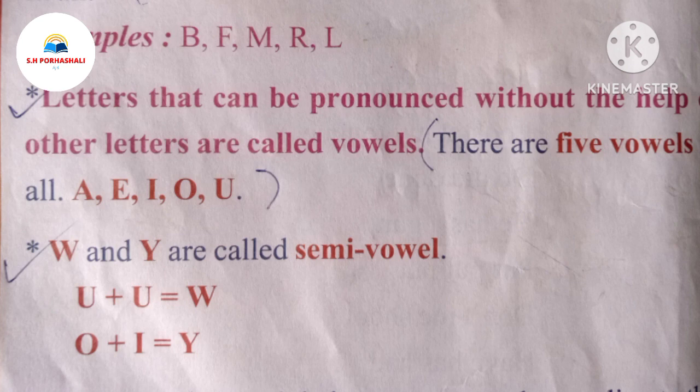E, I, O and U. There are five vowels that are the same. They are: A, I, O, U — and the others are foreign to ask for.